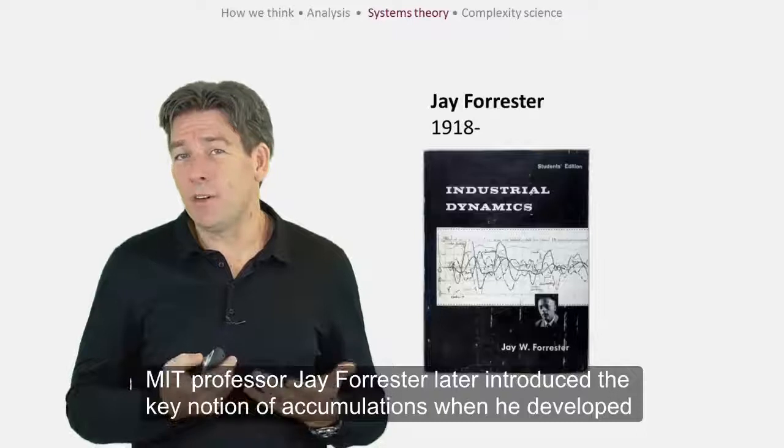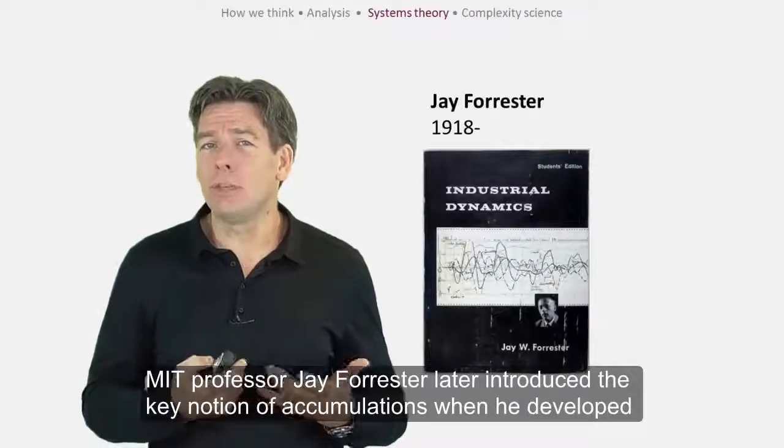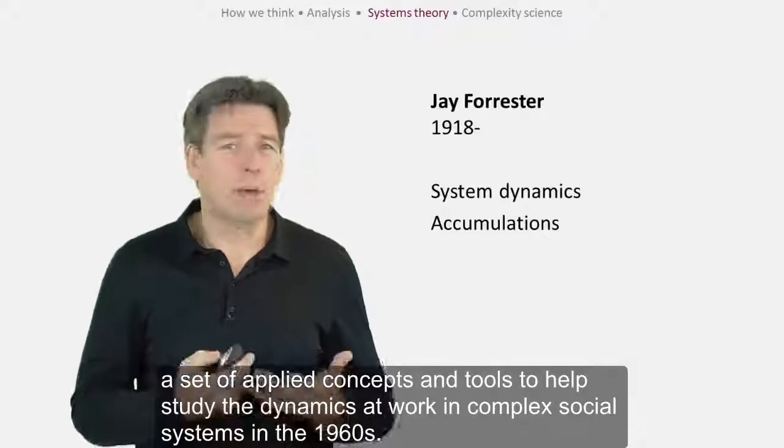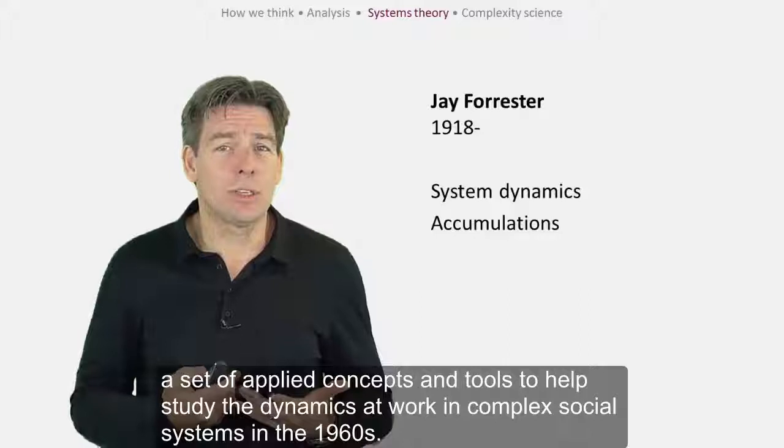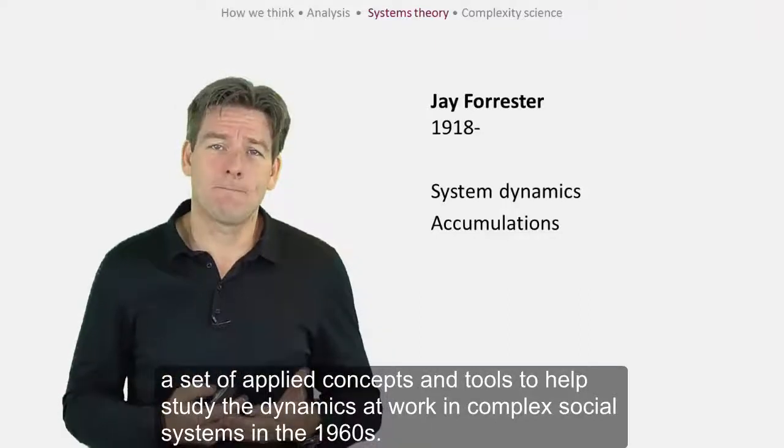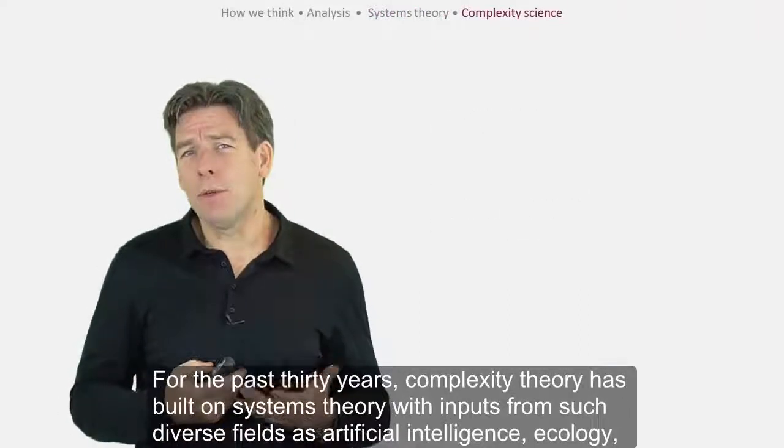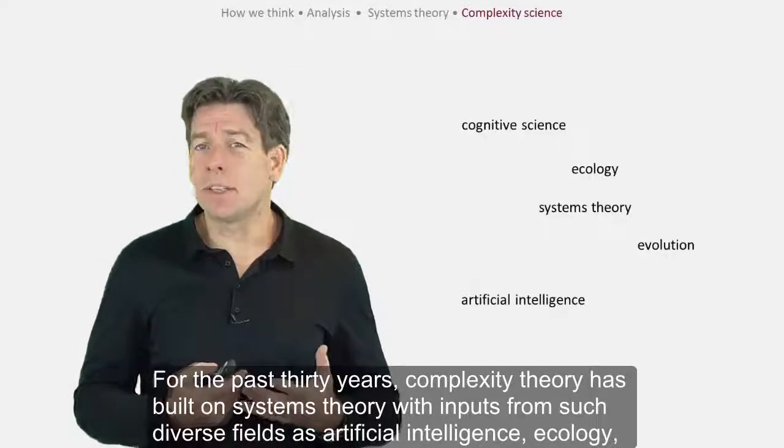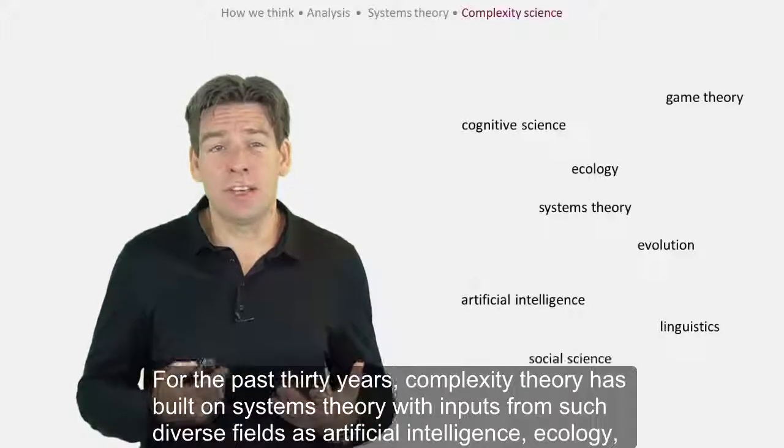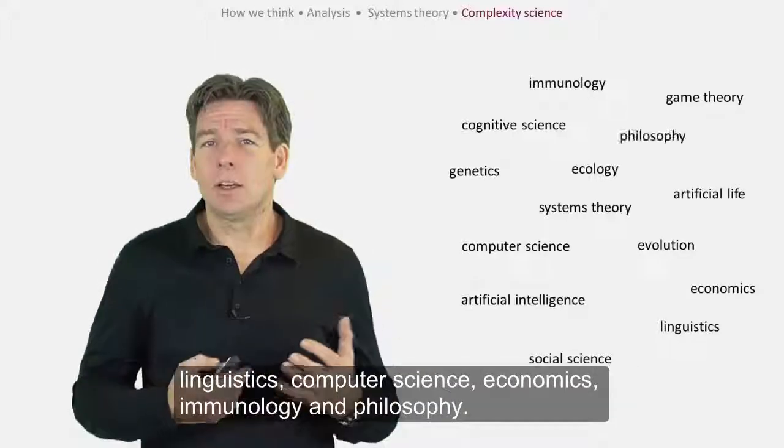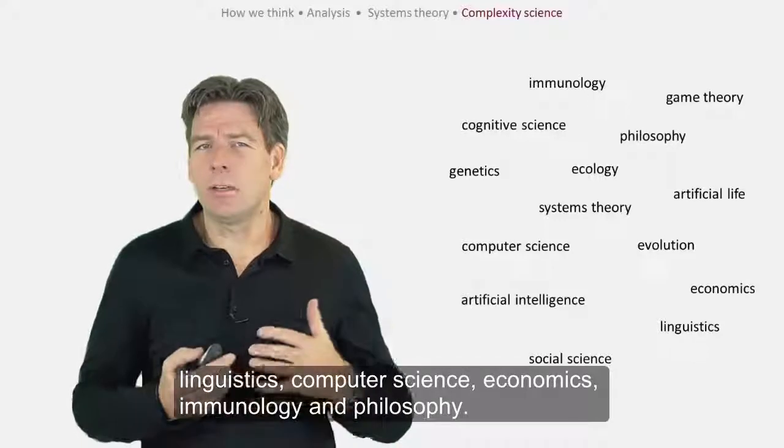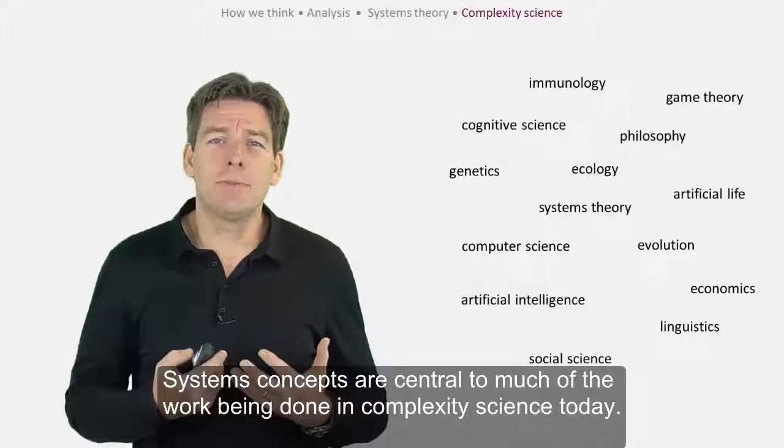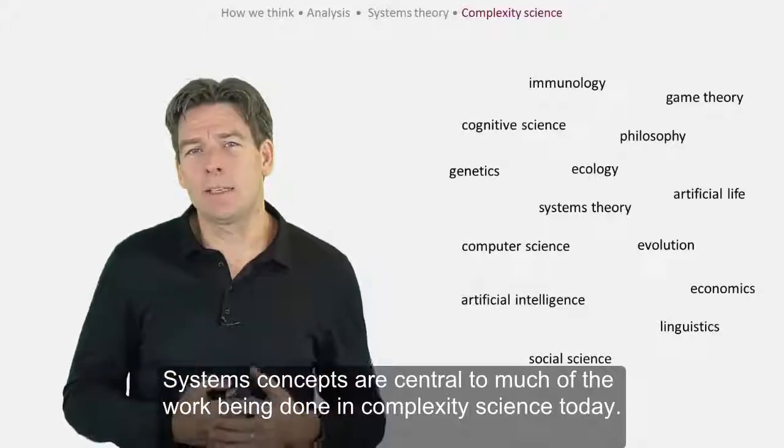MIT professor Jay Forrester later introduced the key notion of accumulations when he developed a set of applied concepts and tools to help study the dynamics at work in complex social systems in the 1960s. For the past 30 years, complexity theory has built on systems theory with inputs from such diverse fields as artificial intelligence, ecology, linguistics, computer science, economics, immunology and philosophy. Systems concepts are central to much of the work being done in complexity science today.